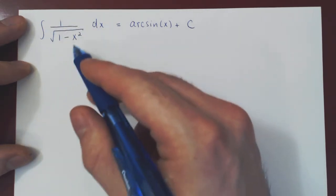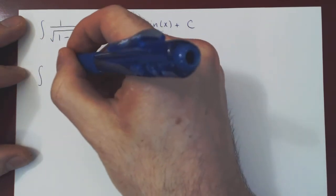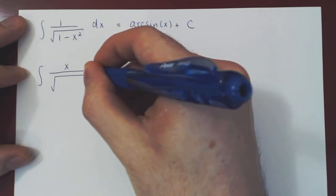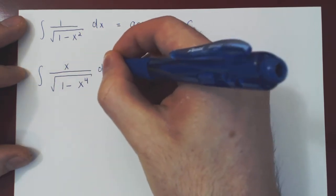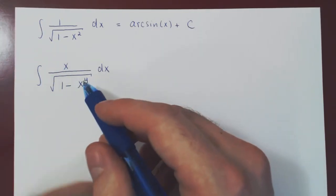Now, what if I tweak this a little bit? What if I ask you to integrate x over the square root of 1 minus x to the 4th power dx? Well, this may seem hopeless, right?